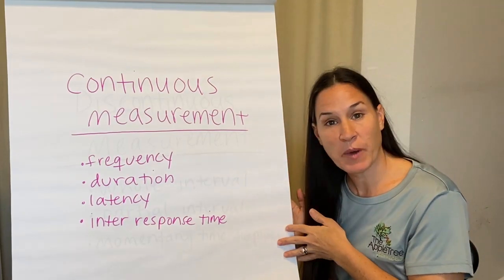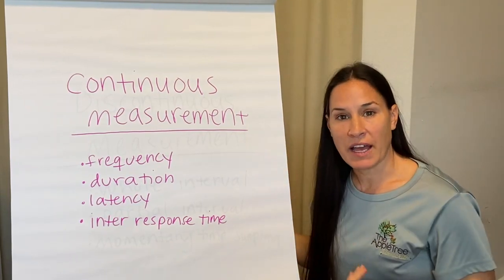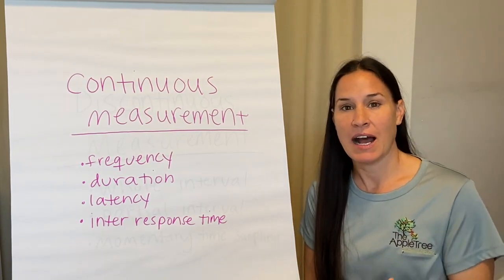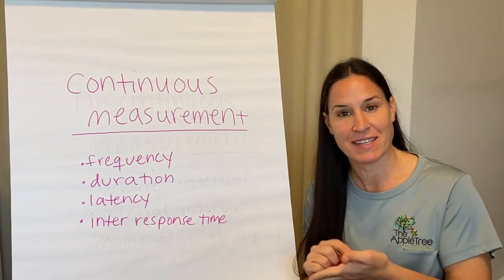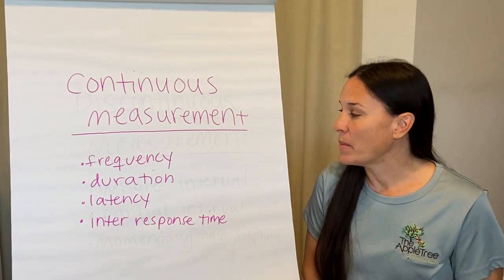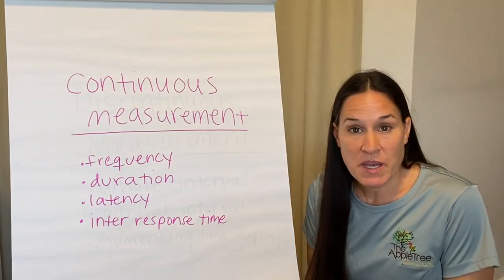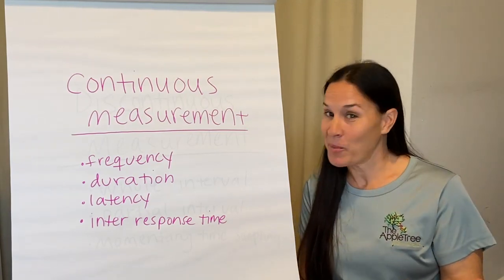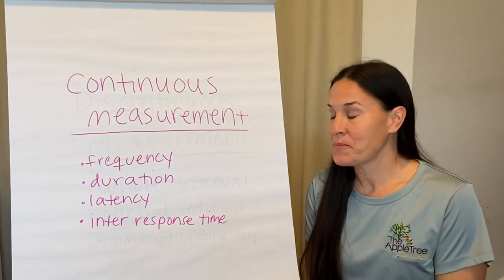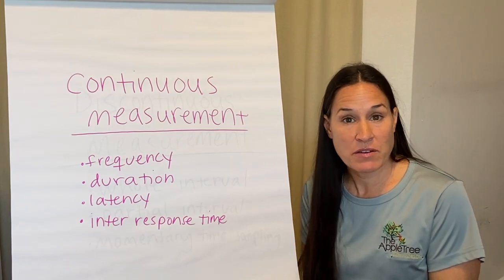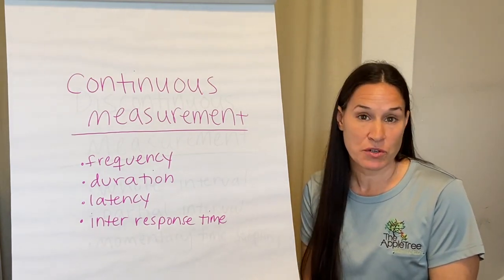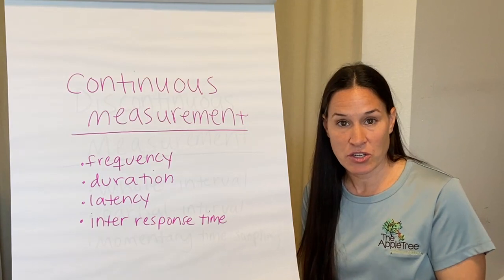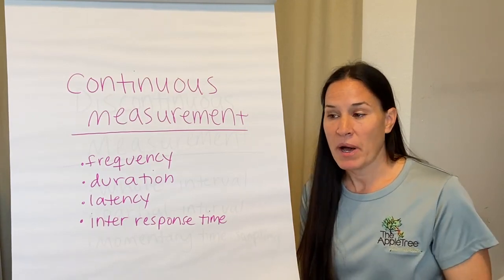Let me elaborate. Continuous measurement — these are examples: frequency, duration, latency, inter-response time. It means that when we are with our client and working to record behaviors — because that's part of your job as an RBT, to record behavior and take data on behavior — and you are told that we are collecting the frequency of Johnny's hitting, that's what the program says. Hitting is operationally defined, and that means any time you observe Johnny hitting when you are with him, you record it.